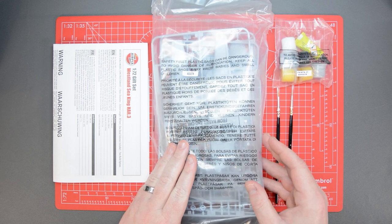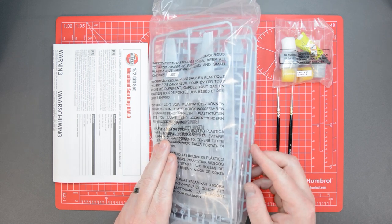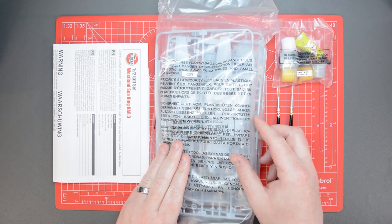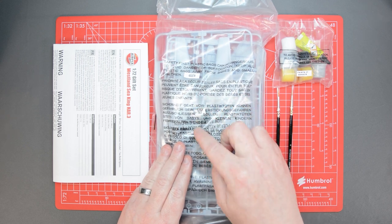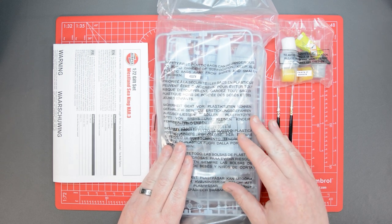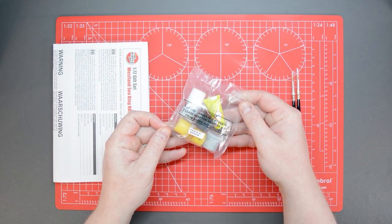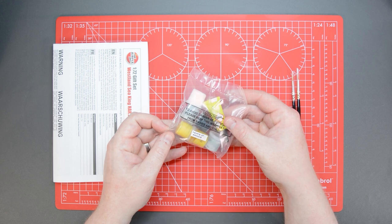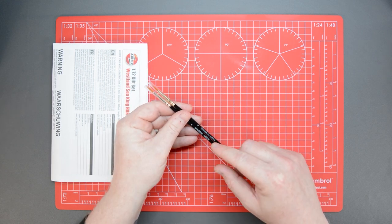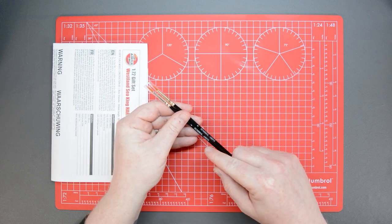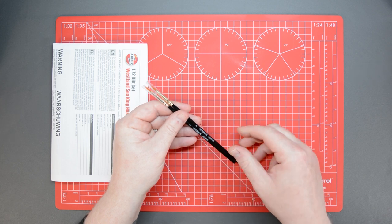Inside the box you'll find a bag containing five frames of light grey injection moulded plastic and to prevent damage a separate bag containing the clear frame which covers all of the windows and lights. The smaller bag contains the six Humbrol acrylic paints and a tube of polycement and there are two paintbrushes, a zero for details and four to cover the larger areas more quickly.